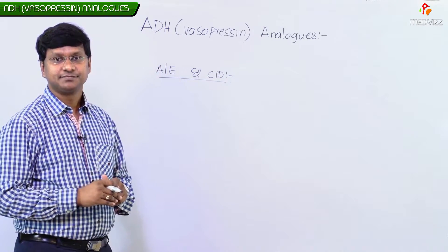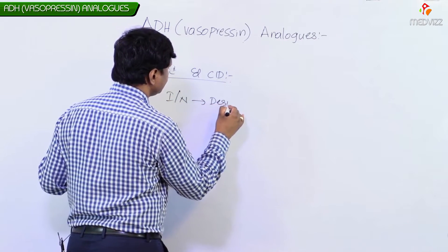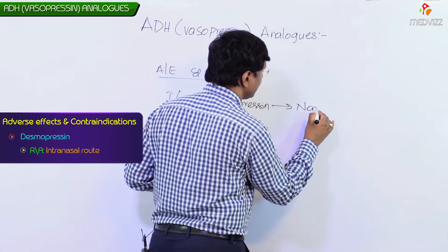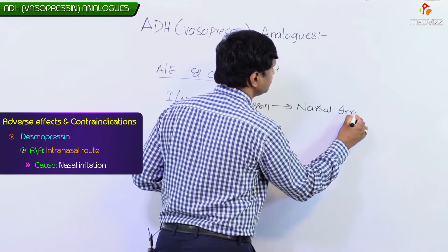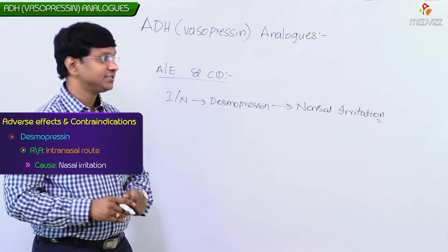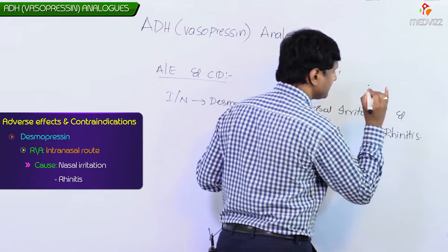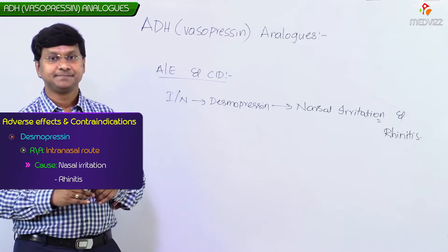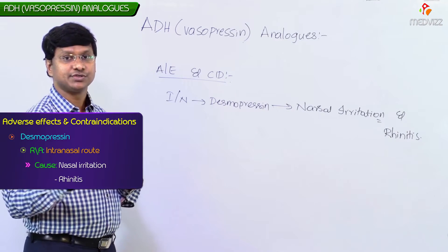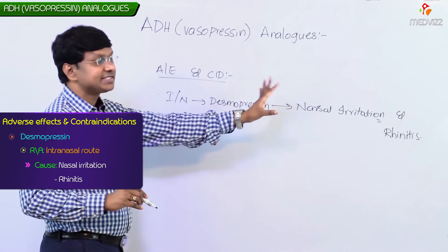When Desmopressin is given intranasally, it will cause nasal irritation and rhinitis. This is one of the important adverse effects of intranasal Desmopressin — nasal irritation and rhinitis.